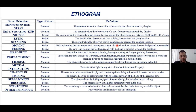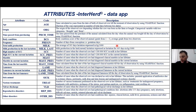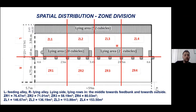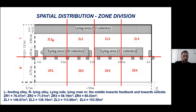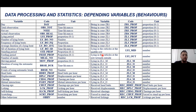We observed all behaviors defined in the ethogram, including different states of the animal such as lying, standing, moving, feeding, social interactions, usage of brush or scratching, and other behaviors. Regarding attributes, we used the farm's application software data, recording the age, production level, and medical history with different diseases and sicknesses during the lifetime of the animals. To understand the spatial distribution, we divided the space into eight different zones — four in the feeding area where the feed banks are, and four in the lying area.